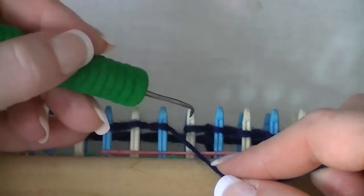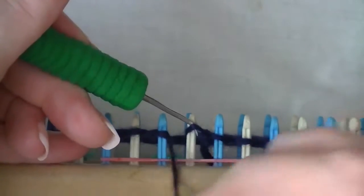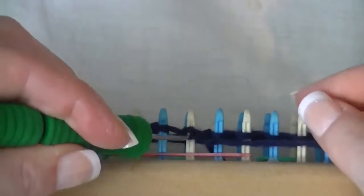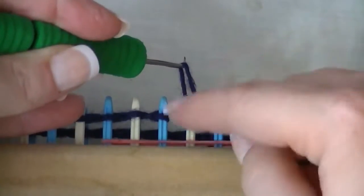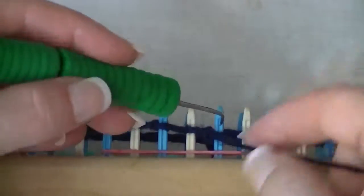For a purl stitch, put your hook down through the top of the loop on the peg. Working yarn underneath. Pull the working yarn up. You've created this new loop. You take the old loop off, put that new loop on.